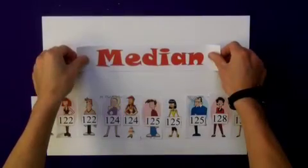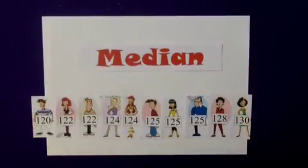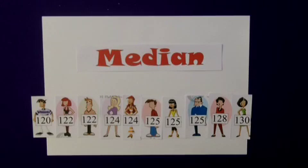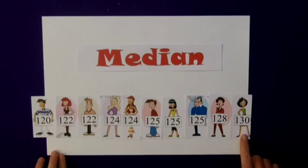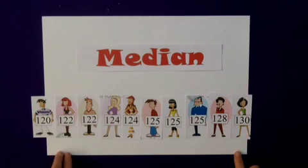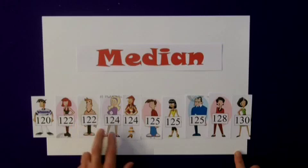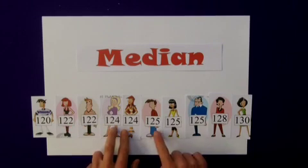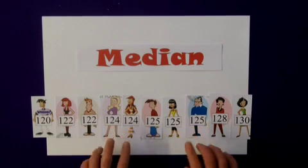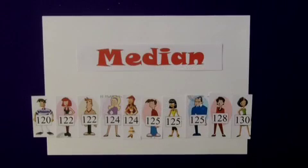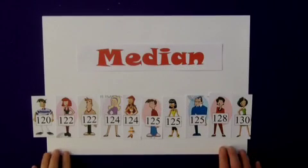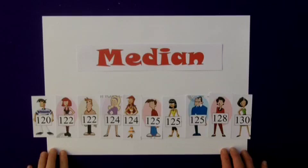The next one I'm going to talk about is the median. Now this one's a little bit trickier. This one takes all of your values and you have to place them in order of size from the smallest right up to the largest, and it's important to include all of the values. Here I have two lots of 122, two lots of 124, and three lots of 125, so it's important to include all of your values. The median is the middle value in all of these.